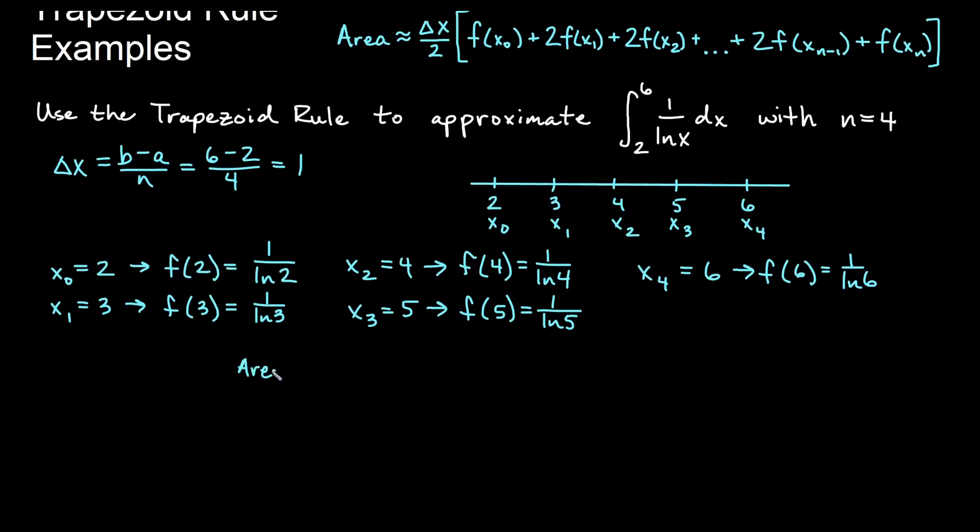So our area is going to be approximated by, remember, delta x is always over 2. For this, we'll have f of x₀, always a single of the first.